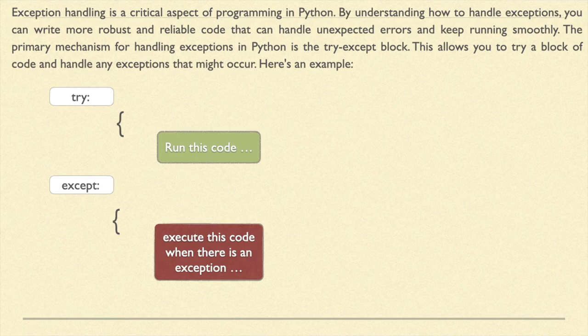Exception handling is a critical aspect of programming in Python. By understanding how to handle exceptions, you can write more robust and reliable code that can handle unexpected errors and keep running smoothly. The primary mechanism for handling exceptions in Python is the try-except block — by implementing a try-except block we can handle exceptions or errors raised by a particular block of code.